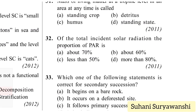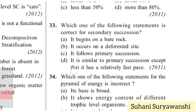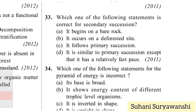Of the total incident solar radiation, the proportion of photosynthetically active radiation (PAR) is less than 50 percent.